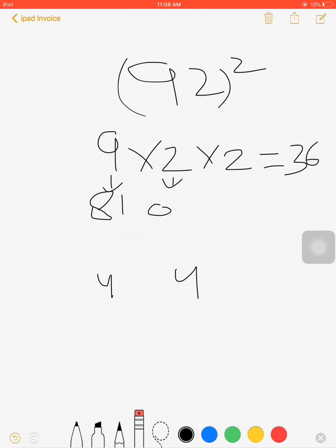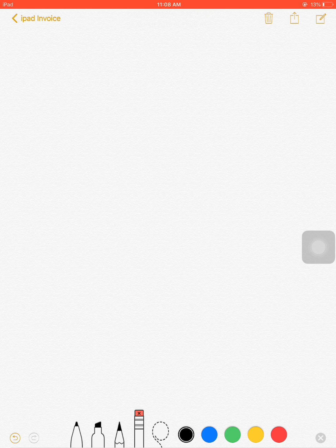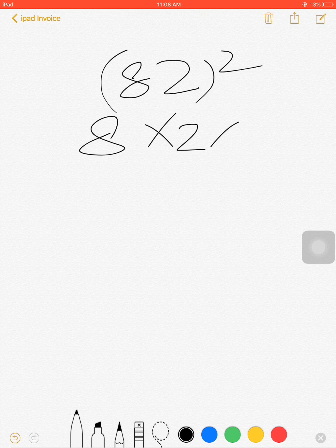This is a very simple trick. Let's take another example - the square of 82. So 8×2=16, and always multiply by 2, so 16×2=32.